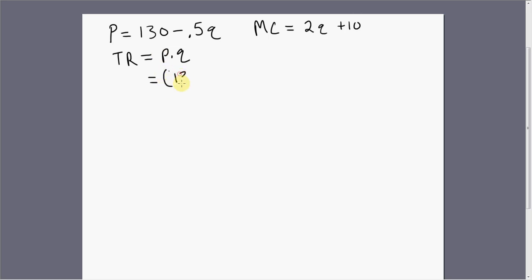Substituting in the inverse demand function for price, so just substituting 130 minus 0.5Q in for price, multiplying it through by Q. We get a total revenue expression equal to this.